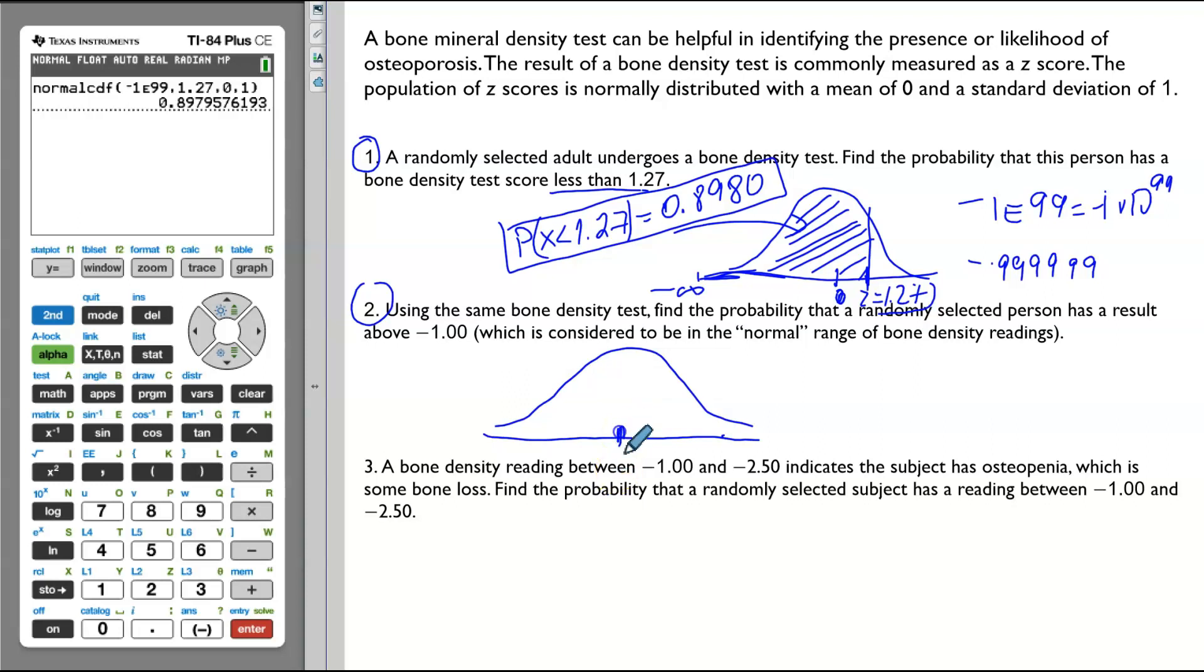Mean is 0. Negative 1 would be 1 to the left of 0. And we are looking for probability of x above negative 1. So, x is greater than negative 1. Greater than negative 1 will be on the right side of negative 1.